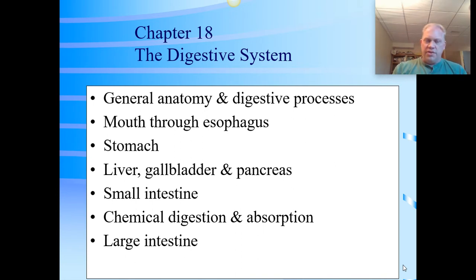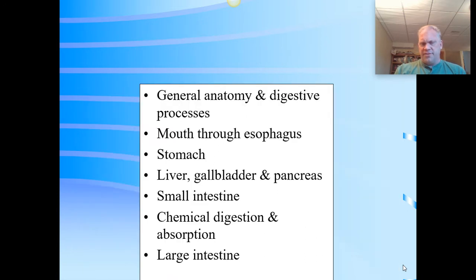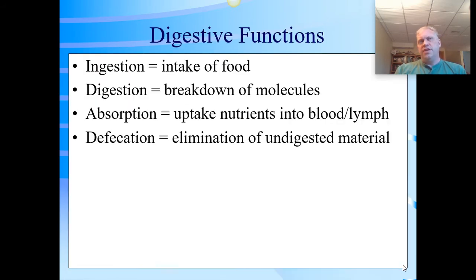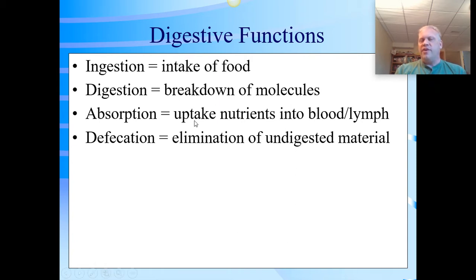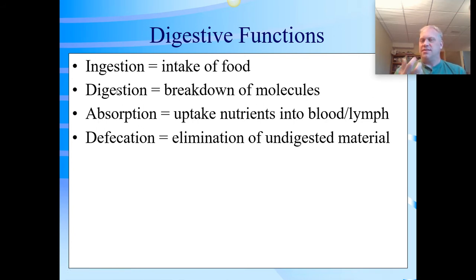The digestive system exists in four major phases. First, we must ingest our food — take food into our bodies. Then we've got to break it down. Digestion happens in two parts: we have mechanical digestion, where you break food down into smaller bits for the chemicals to work on. We have to mechanically break it down.